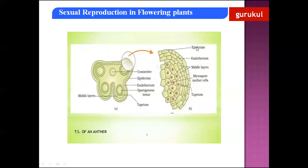The outermost layer is called the epidermis, which helps protect the anther from mechanical injuries. Inner to the epidermis is the endothecium, which plays a very important role in the dehiscing of the anther because it is hygroscopic — it absorbs water from the atmosphere and helps in dehiscing the anther once it is mature. Inner to the endothecium is the middle layer, around two to three layers. Then inner to the middle layer is the tapetum.